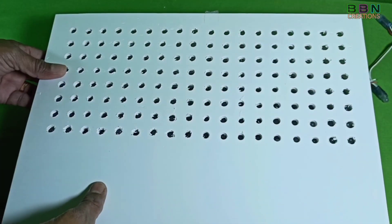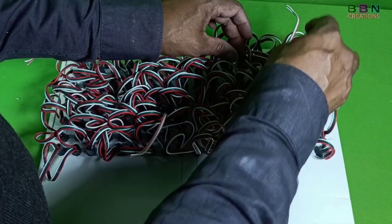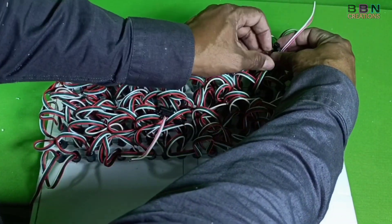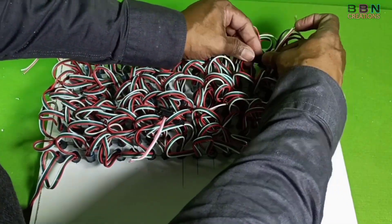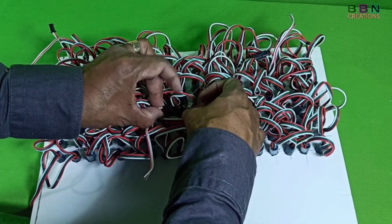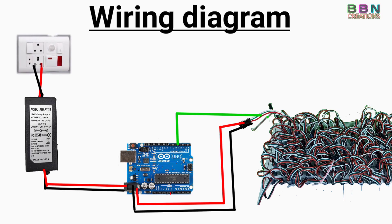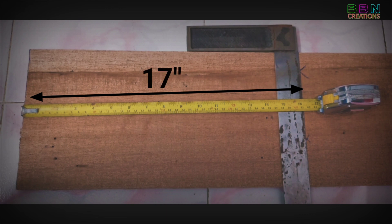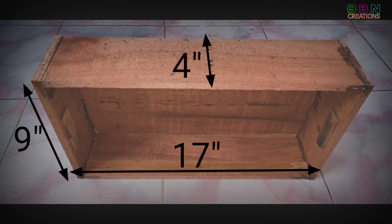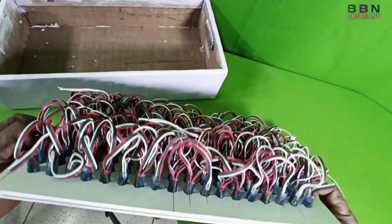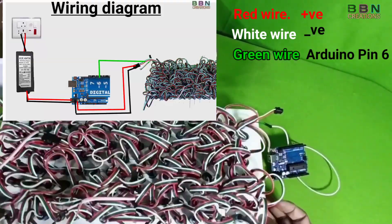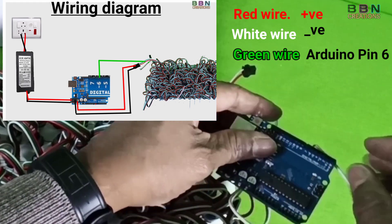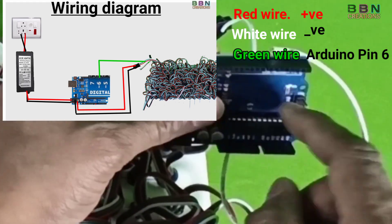Our board is now ready for power supply connection. For the wiring diagram, first interconnect all strings in series. Connect the red colour wire with the power supply box positive terminal and the white colour wire with the negative terminal. Then connect the middle green wire with Arduino board pin number 6.